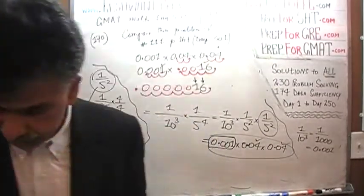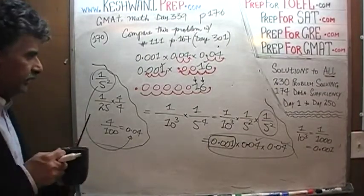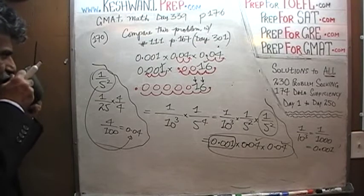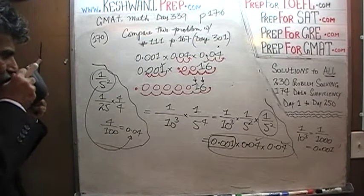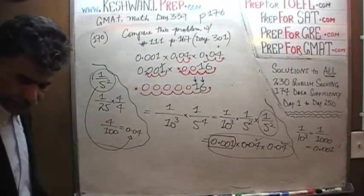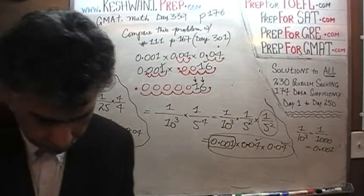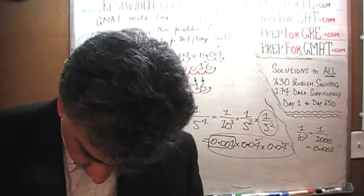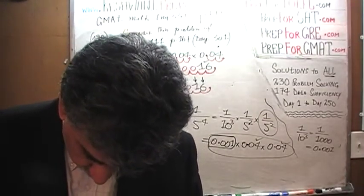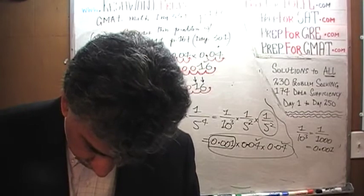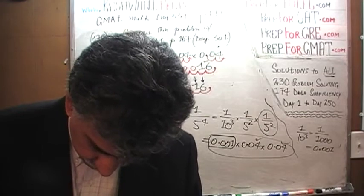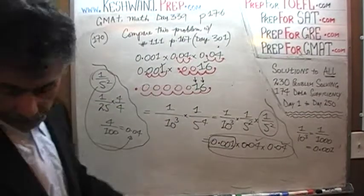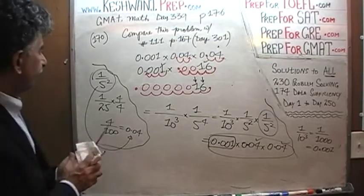Let's do the next one — number 171. Let me verify: 2, 4, 5. One, two, three, four, five. That's right, 245. Okay, let's do the next one.